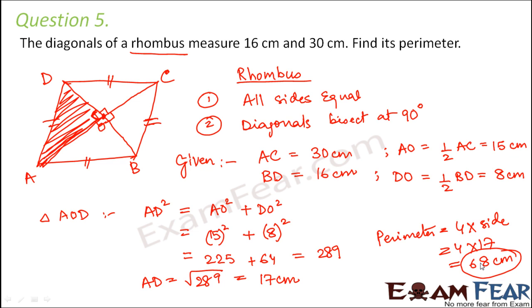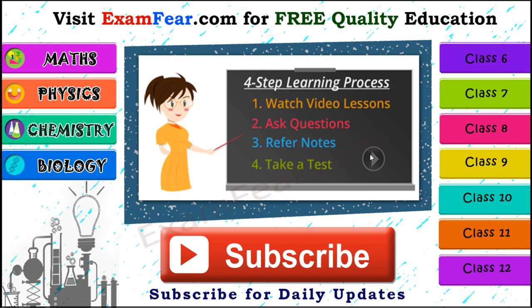With this we have reached the end of this lesson on properties of triangles. I hope this lesson has given you a broader idea on the subject of geometry. Geometry relates to everything you have learned previously — you need a good understanding of parallelograms, their properties, quadrilaterals, and their properties, because we use all of those properties to solve problems. Please visit examfear.com for free quality education, where you can watch video lessons, ask questions, refer to notes, and take free online tests. We have content for class 6 to 12 on physics, chemistry, mathematics, and biology along with practical videos. Please subscribe to our channel for daily updates. Thank you.